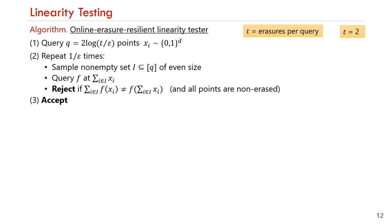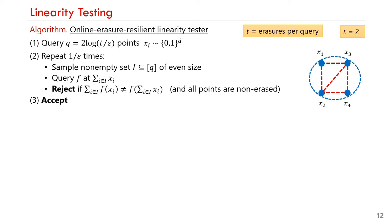Let's demonstrate the tester for the case when t equals 2. Suppose the tester first queries x_1, then x_2. The oracle can erase x_1+x_2, represented by an edge between the two points. Next, the tester queries x_3 and the oracle can erase x_2+x_3 and x_1+x_3. Then the tester queries x_4 and the oracle erases two potential sums x_3+x_4 and x_2+x_4. Now the tester can query sums between the reserved points, either x_1+x_4, which would be non-erased, or x_1+x_2+x_3+x_4, which would also be non-erased.